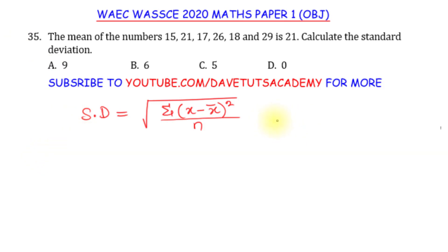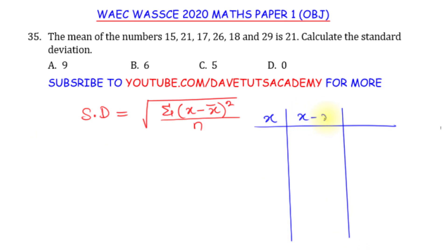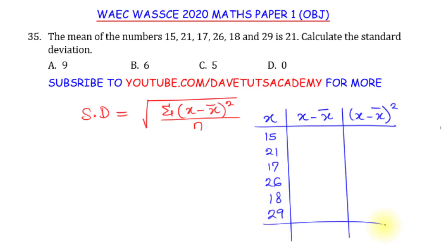To carry this out, I'll draw a table with columns for x, x minus the mean, and the square of x minus the mean. My data entries are 15, 21, 17, 26, 18 and 29. We'll be summing whatever we get. Our mean was given to us as 21, which makes life easy — we don't need to compute that again.